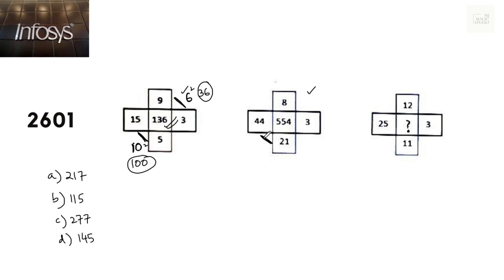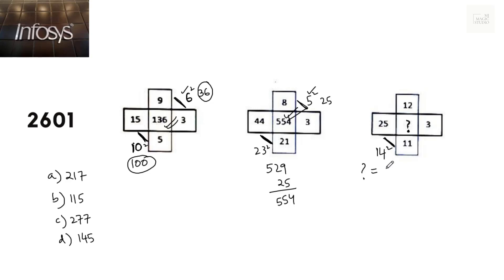Let me check whether it fits in here: 44 minus 21 is 23, and 23 squared is 529. 8 minus 3 is 5, and 5 squared is 25. Now 529 plus 25 is 554 — that also matches. So for the question mark: 25 minus 11 is 14, 14 squared is 196; 12 minus 3 is 9, 9 squared is 81. 196 plus 81 is 277, and that fits in option C.